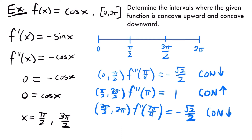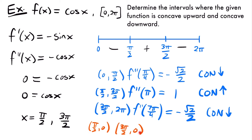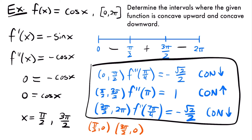So for the interval from 0 to pi over 2, our function was concave downward. Then from pi over 2 to 3 pi over 2, it was upward. And then from 3 pi over 2 to 2 pi, it's downward again. The concavity is changing at each of these x values, so x equals pi over 2 and x equals 3 pi over 2 are both inflection points. If you plug each of these into cosine, your inflection points would be pi over 2 comma 0 and 3 pi over 2 comma 0. But we're just looking for the intervals of concavity, so this would be our final answer.